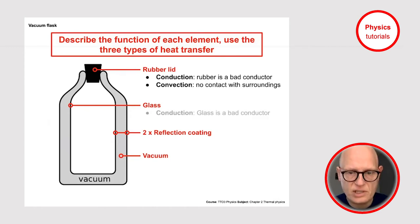The glass, of course, is also a bad conductor, and glass is very suitable because it can be coated with a reflection coating. Reflection coating, of course, prevents radiation from happening.